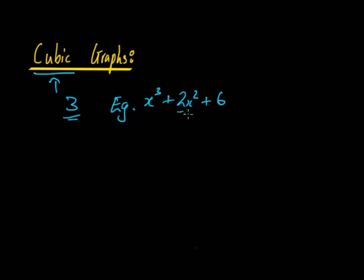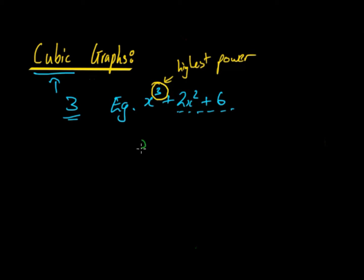It doesn't matter what the other terms are, as long as you have the unknown variable to the power of 3, and that has to be the highest power. So if there was an equation such as x⁴ plus 2x³ plus 3, that would not be a cubic function and therefore not a cubic graph, as the highest power is 4.